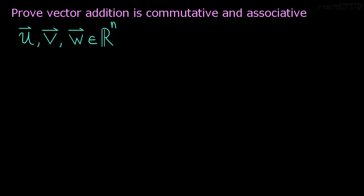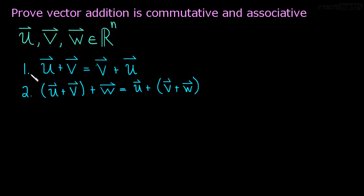And let's figure out what we're trying to prove. So we're trying to prove that vector addition is commutative, so u plus v is the same as v plus u, and associative, so (u plus v) plus w is the same as u plus (v plus w).